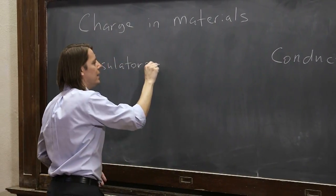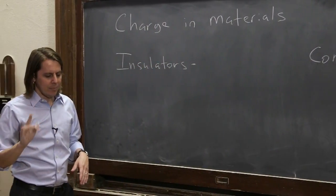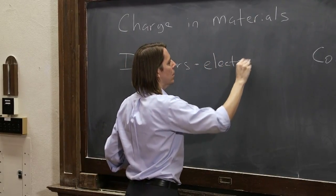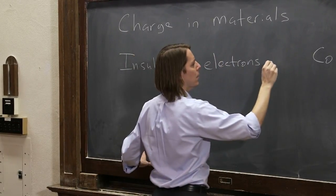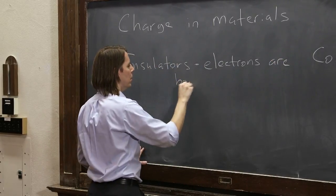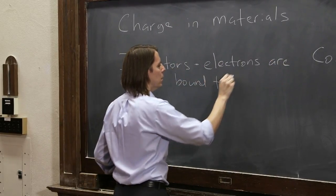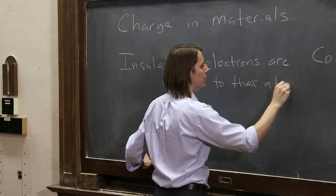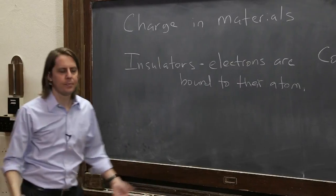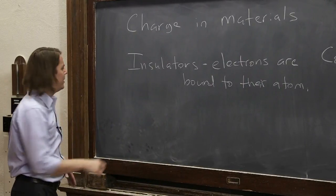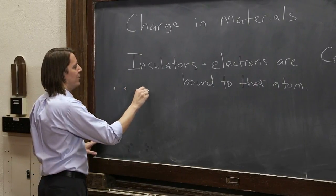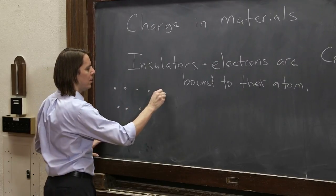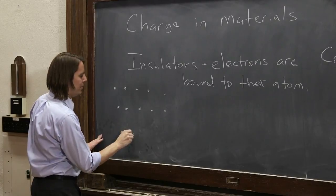So what goes on in an insulator? Basically all you need to know is that the electrons are bound to their atom. They're not free. So if we think about the inside of an insulator, we can imagine that the atoms, the nuclei of the atoms, are arranged in some way. Maybe like this.